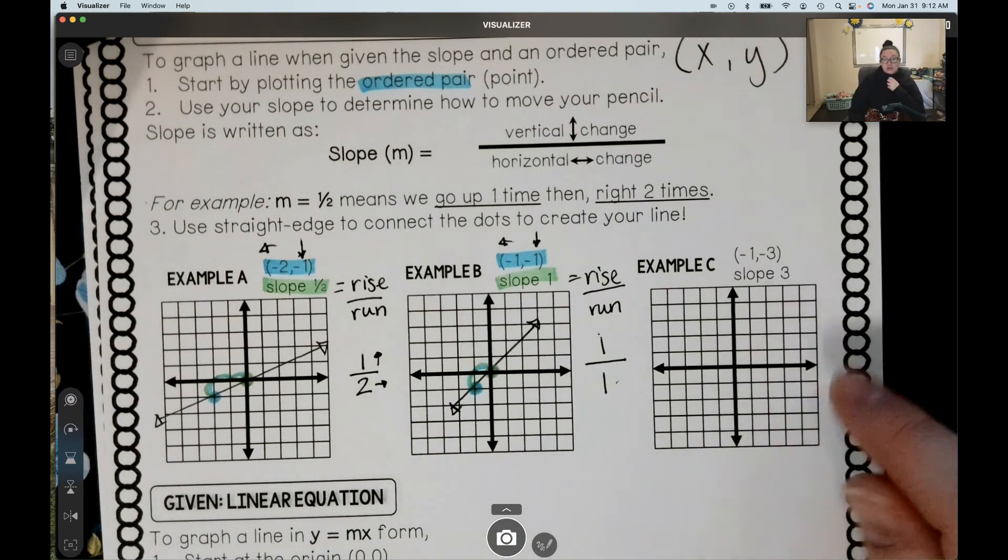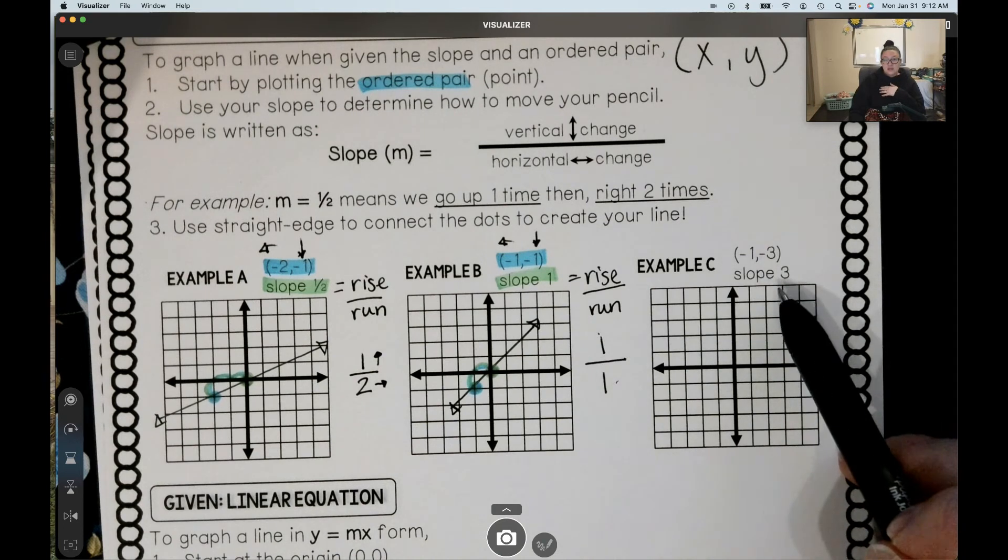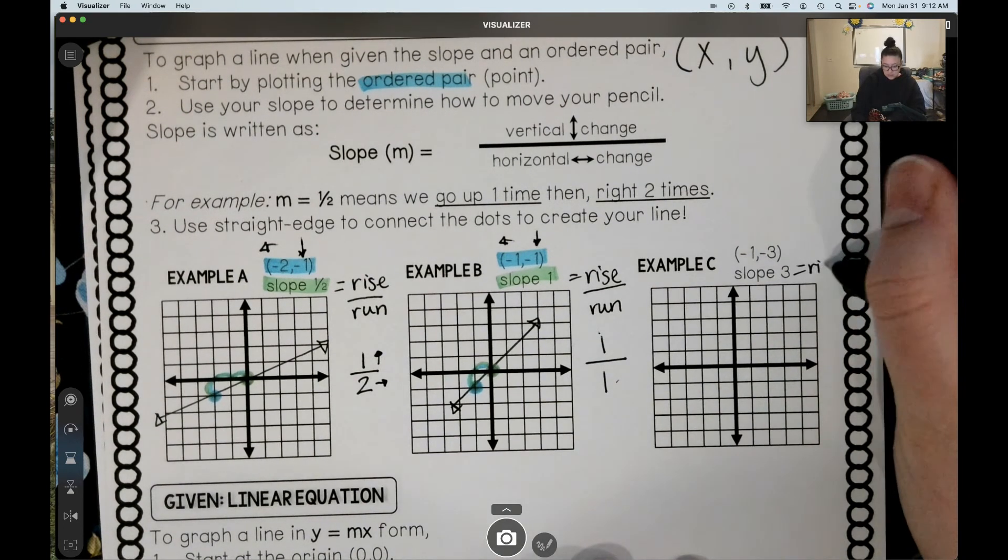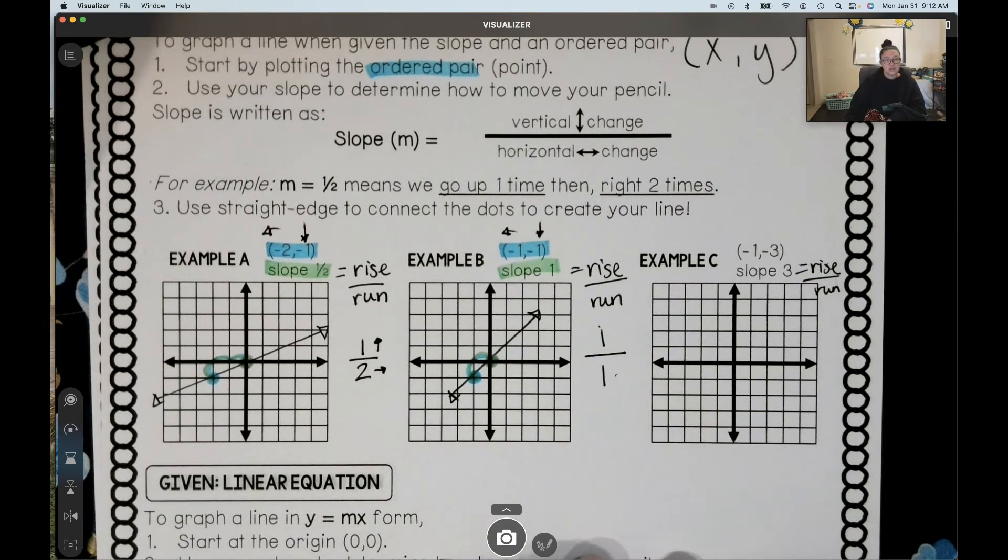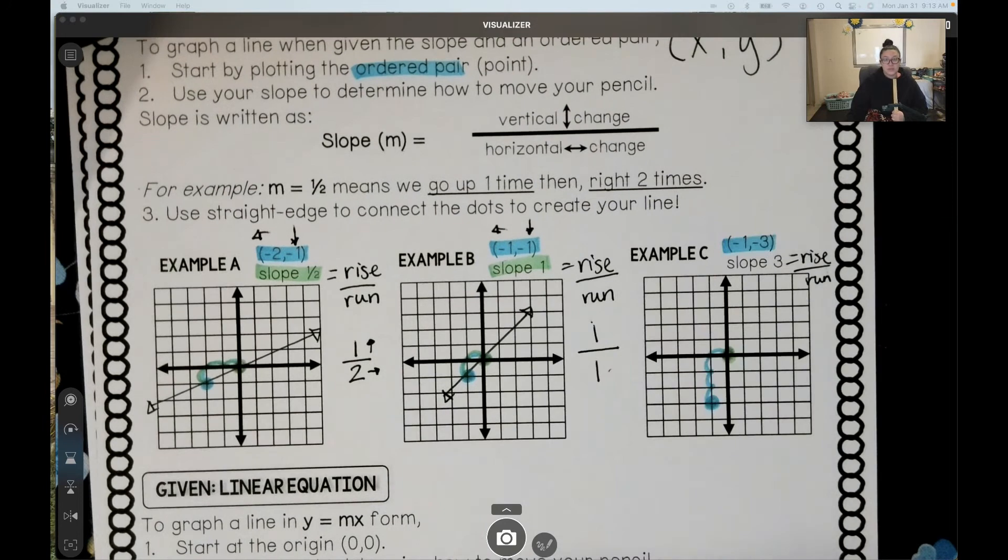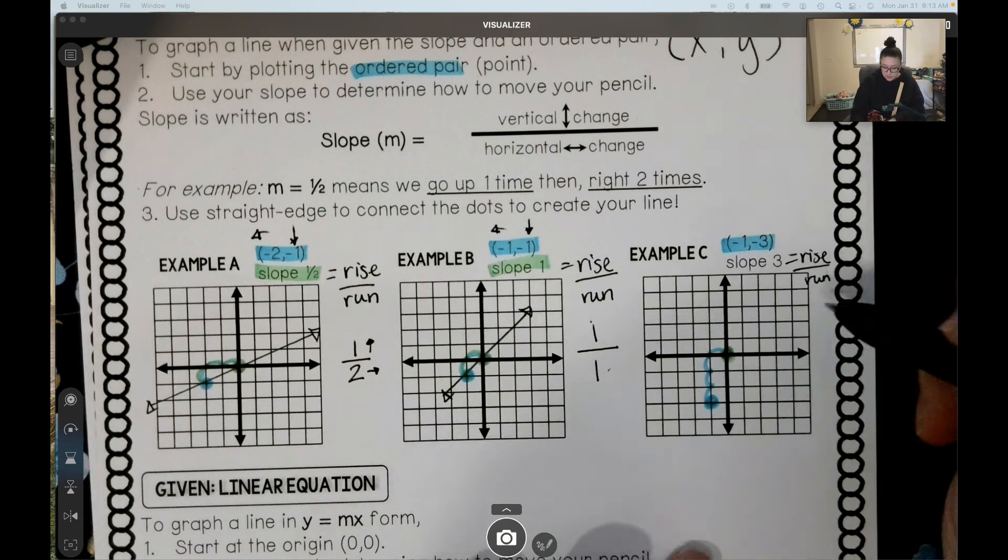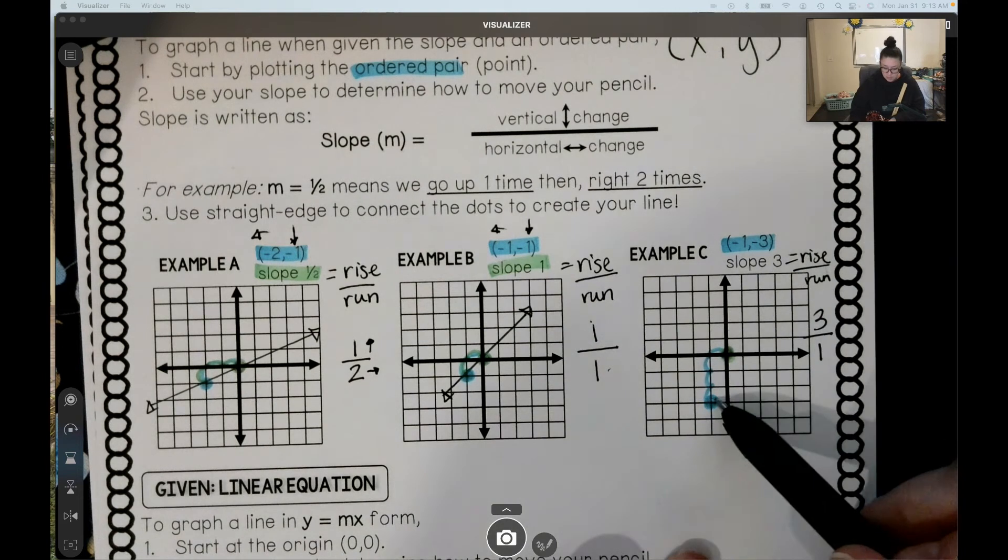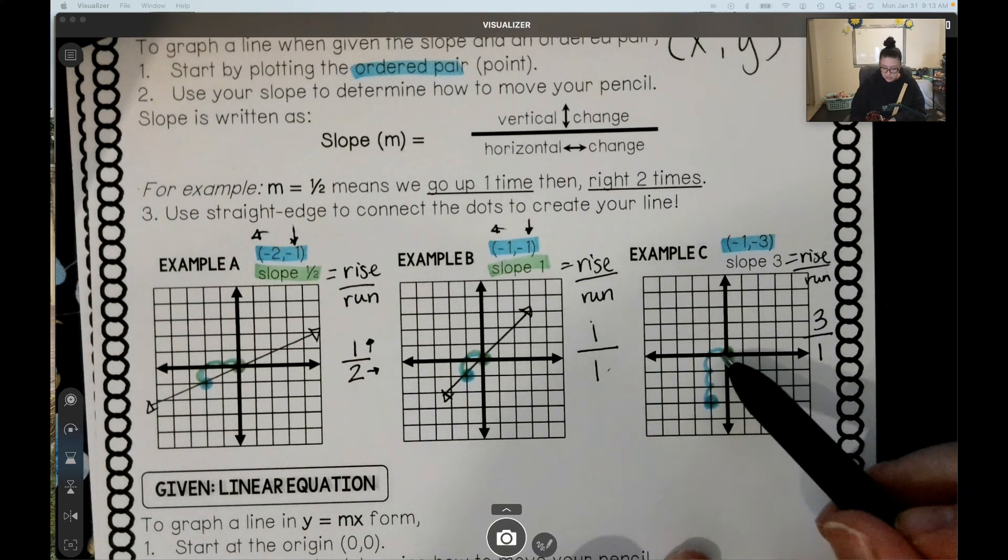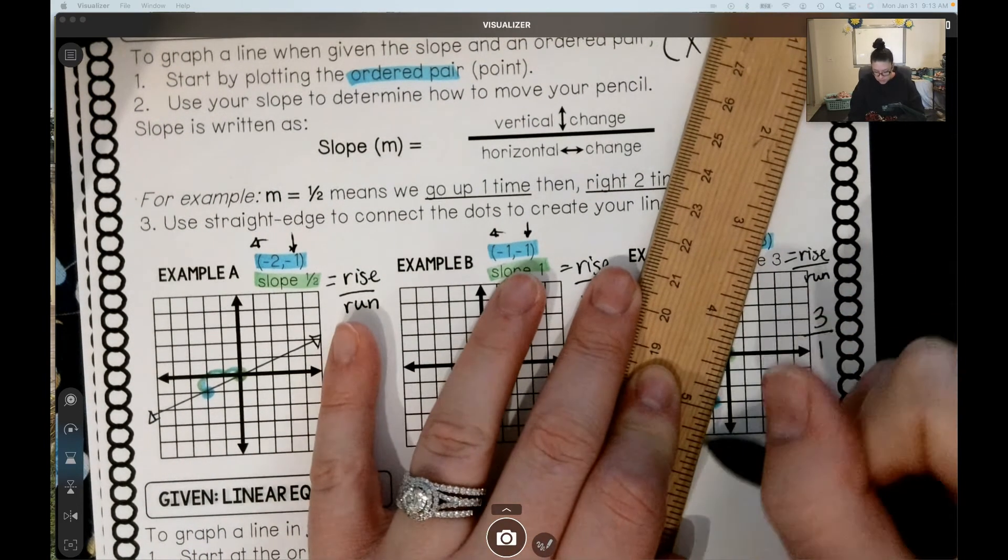Go ahead, try this next one on your own. Your point is negative 1, negative 3. Your slope is 3. Turn that into a rise over run to help you as you do example C all on your own. So you should get your point, negative 1, negative 3 there. Your slope, your rise over run. Turning any number into a fraction by putting it over top of 1. 3 divided by 1 gives me that 3 that I need for my slope. So from that point, I rise 3, run 1. And then I get my line.